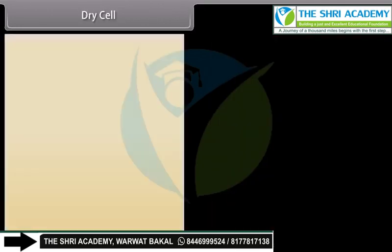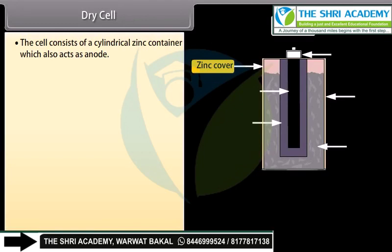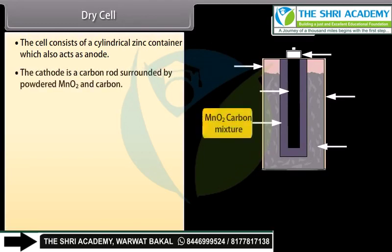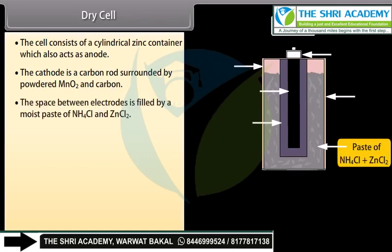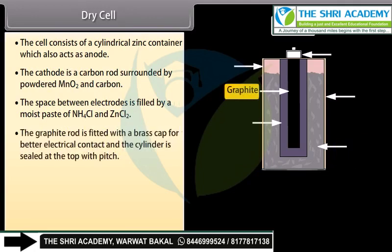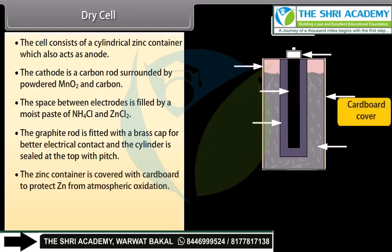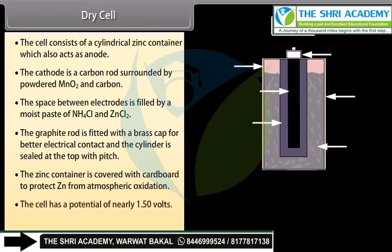The dry cell consists of a cylindrical zinc container which also acts as the anode. The cathode is a carbon rod surrounded by powdered MnO₂ and carbon. The space between electrodes is filled by a moist paste of NH₄Cl and ZnCl₂. The graphite rod is fitted with a brass cap for better electrical contact, and the cylinder is sealed at the top with pitch. The zinc container is covered with cardboard to protect zinc from atmospheric oxidation. The cell has a potential of nearly 1.50 volts and finds extensive use in torches, transistors, radios, and clocks.